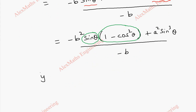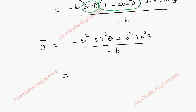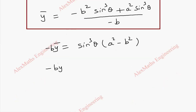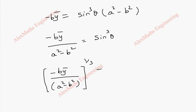So ȳ equals (minus b² sin³ θ plus a² sin³ θ) divided by minus b. Cross multiplying: minus b times ȳ equals sin³ θ times (a² minus b²). Therefore, sin θ equals (minus b ȳ divided by a² minus b²) to the power one-third. So we have separately what is sin θ and what is cos θ.